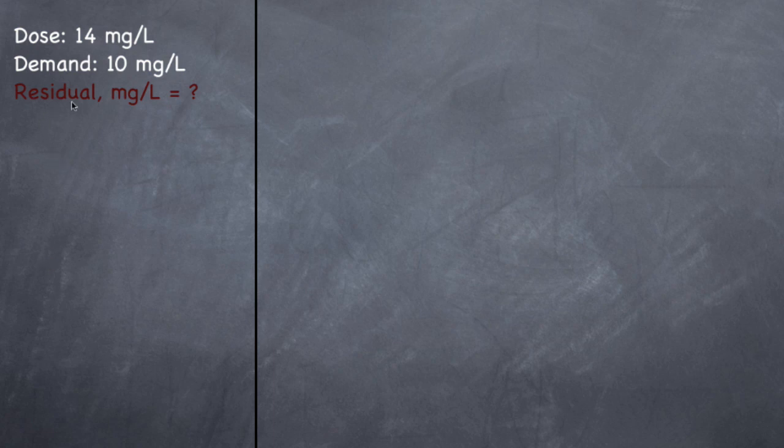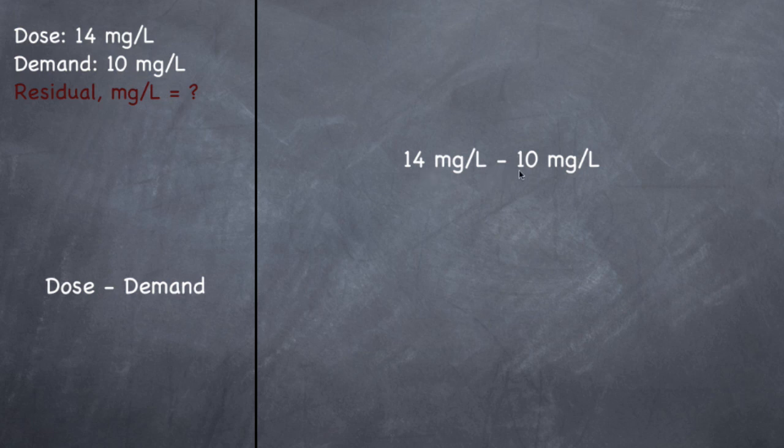Okay, so now we need to find residual. What was left over? We have a dose and we have what is being consumed. So the formula for residual is dose, what we fed, minus the demand, what was consumed, and that'll give you what was left over. So if we go ahead and do that, dose is 14 milligrams per liter, minus 10 milligrams per liter demand, gives you a residual of 4 milligrams per liter. That's how much is left over.